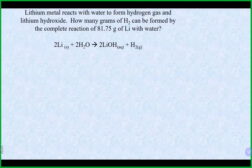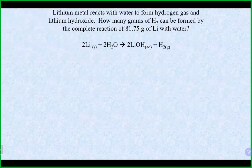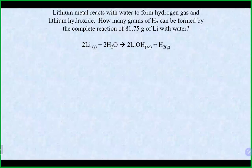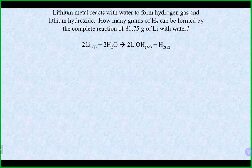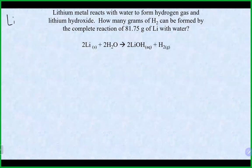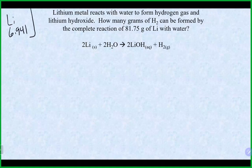Let's try a continuation with the same equation, but now we want to know how many grams of H₂ are produced if we start with 81.75 grams of lithium. Lithium from the periodic table is 6.941 grams per mole.